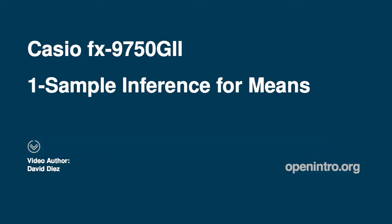I'll cover how to construct a confidence interval and run a hypothesis test for a single mean using a Casio FX-9750 graphing calculator in the context of an example.